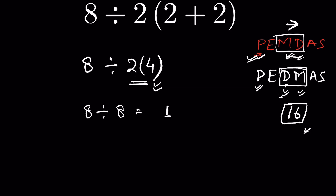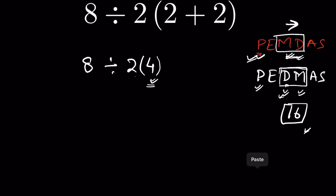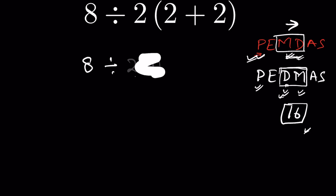There are two mistakes being made: one is not following the left-to-right order, and the other is treating the parenthesis as a separate operation. Remember: the parenthesis is not an operation unless there is a number along with a sign attached to it. Otherwise it is just a way of writing multiplication. So we write it plainly and avoid the confusion.